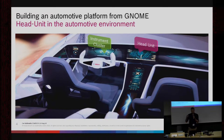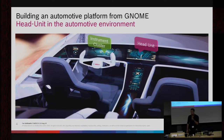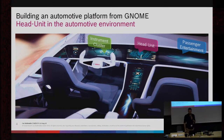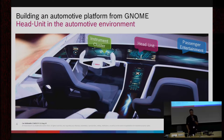In older cars you have an analog indicator showing the speed or fuel level. In modern cars you have a completely customizable screen where you can show all kinds of information right in front of you. Going further into the future, you can even have passenger entertainment so that each passenger has their own display, maintained by some central computer in the car providing movies or music.